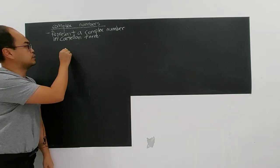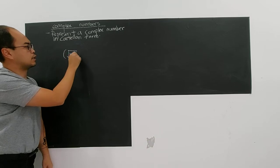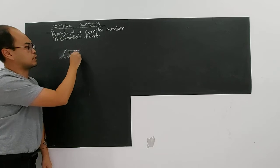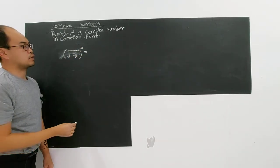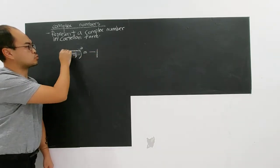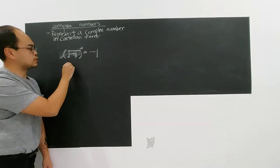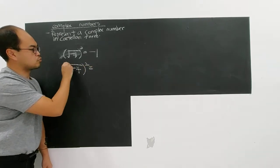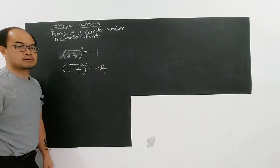For the simple example, let's say square root of negative 1. If you square, you will get negative 1. Or square root of negative 4, if you square — by index law — you will get negative 4. So, can you square something to get a negative number?